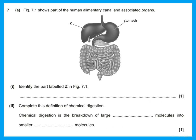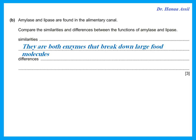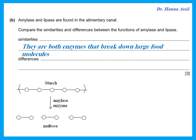Figure 7-1 shows part of the human alimentary canal. Identify the part labeled Z — that is the liver. Chemical digestion is the breakdown of large insoluble molecules into smaller soluble molecules. Amylase and lipase are both enzymes that break down large food molecules, but amylase breaks down starch into maltose, while lipase breaks down fats into fatty acids and glycerol.